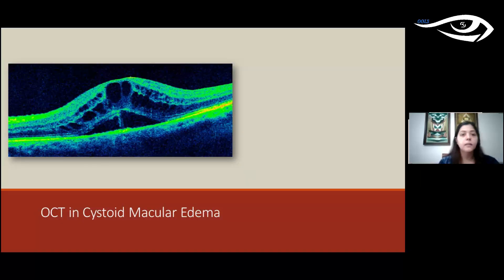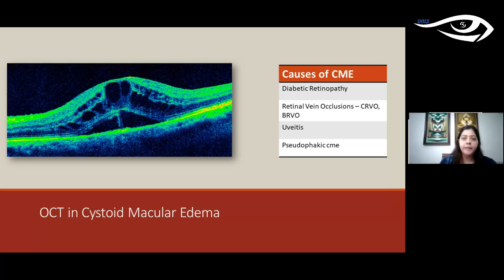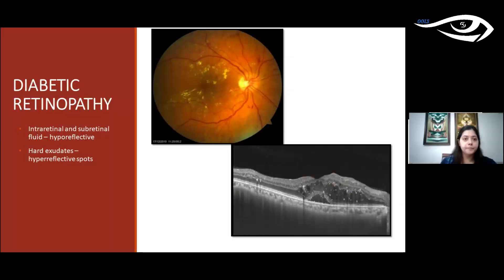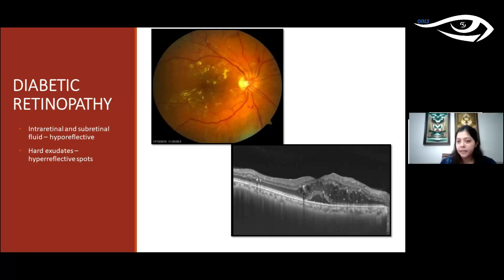The third group involves changes within the retina with normal vitreous and choroid — typically called cystoid macular edema (CME). Common causes include diabetic retinopathy, vein occlusions, uveitis, and pseudophakic CME. In diabetic retinopathy, OCT shows increased retinal thickness, hypo-reflective spots indicating fluid, subretinal fluid, and hyper-reflective spots corresponding to hard exudates — all correlated with fundus findings of hemorrhages and hard exudates.